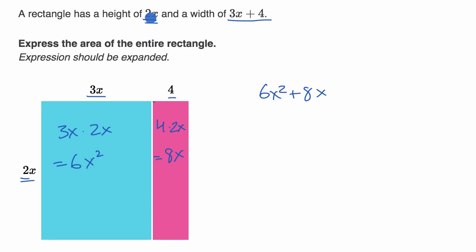And once again, we could have just thought about it as the height is 2x. We're going to multiply it times the width, times 3x + 4. And then we just distribute the 2x. So 2x times 3x is 6x². 2x times 4 is 8x.